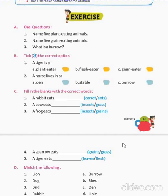What is a boro? A boro is a hole dug by a rabbit as a dwelling. Take the correct option: a tiger is a flesh eater; a horse lives in a stable.